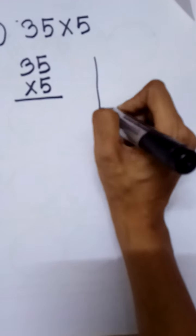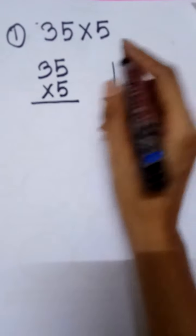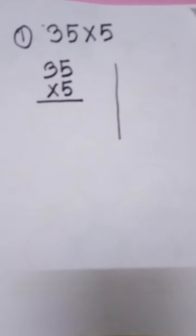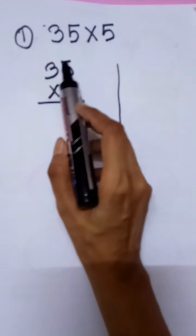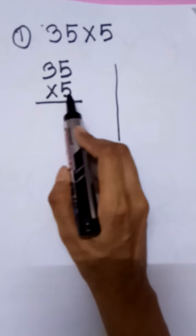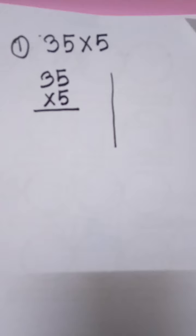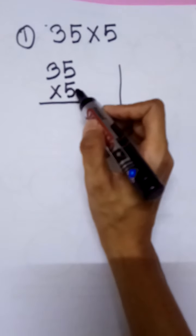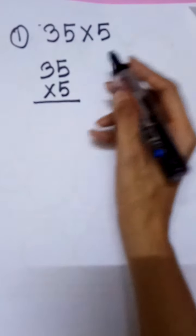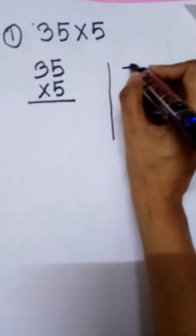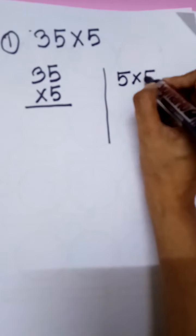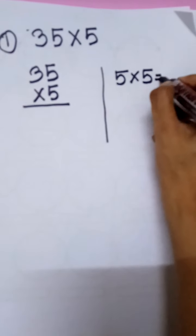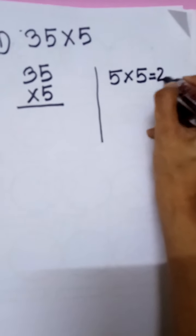I am doing the rough work here. First here, 5 is in the ones place and 3 is in the tens place. We have to multiply ones with ones first. The ones place is 5 and the lower ones is also 5. 5 times 5 equals 25.